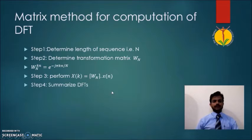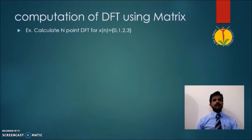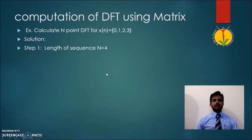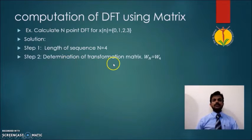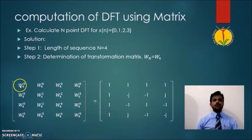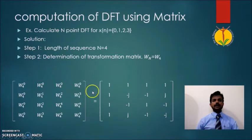Let us take an example. The given sequence X(n) has samples {0, 1, 2, 3} and we have to determine its 4-point DFT using the matrix method. First step: the length of the sequence is N = 4, since there are 4 samples. Second step: we determine the transformation matrix W_4, which is a 4×4 square matrix. The elements of this matrix are the twiddle factors e^(-j2πnk/N), and solving this mathematically gives us the 4×4 transformation matrix.